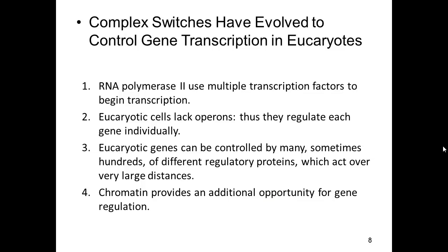Most of what we've been talking about with the trp repressor and the lac operon has been for bacteria. In eukaryotes, things are a little more complex and a little more regulated. The default setting for most human genes is to do nothing, so in general there's extra emphasis placed on activation. RNA polymerase II, which is the RNA polymerase that makes messenger RNA in eukaryotes, generally uses multiple transcription factors to begin transcription. Even though we just saw examples where a single protein could help recruit the polymerase, in eukaryotes it's frequently the case that many proteins help recruit the RNA polymerase.